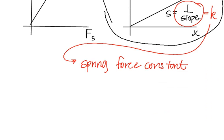Okay, so then that gives me an equation where the spring force is equal to the spring force constant, the slope of that line, times delta of the displacement x.